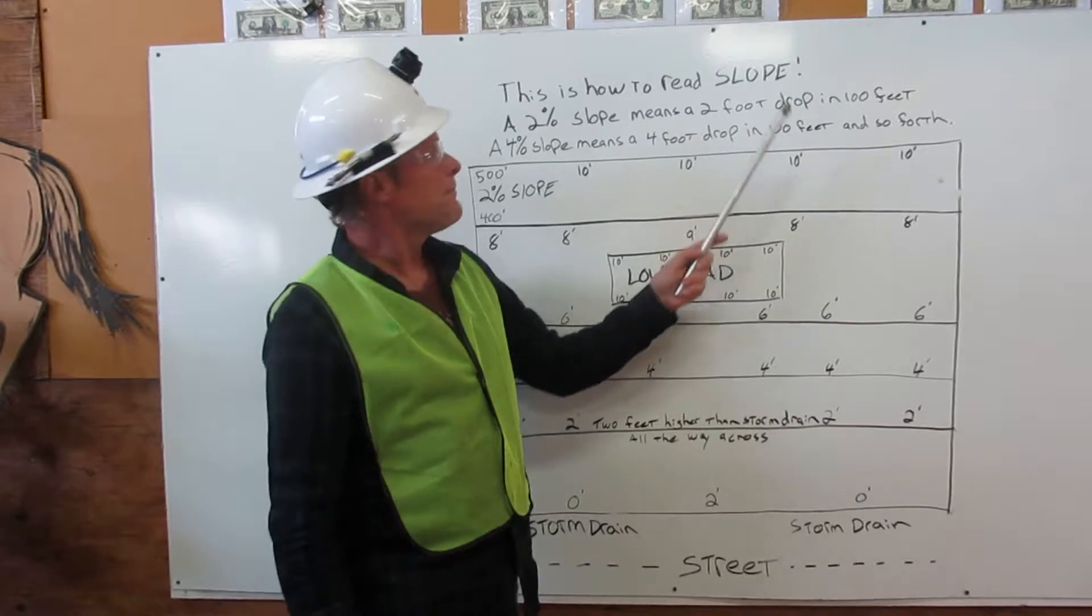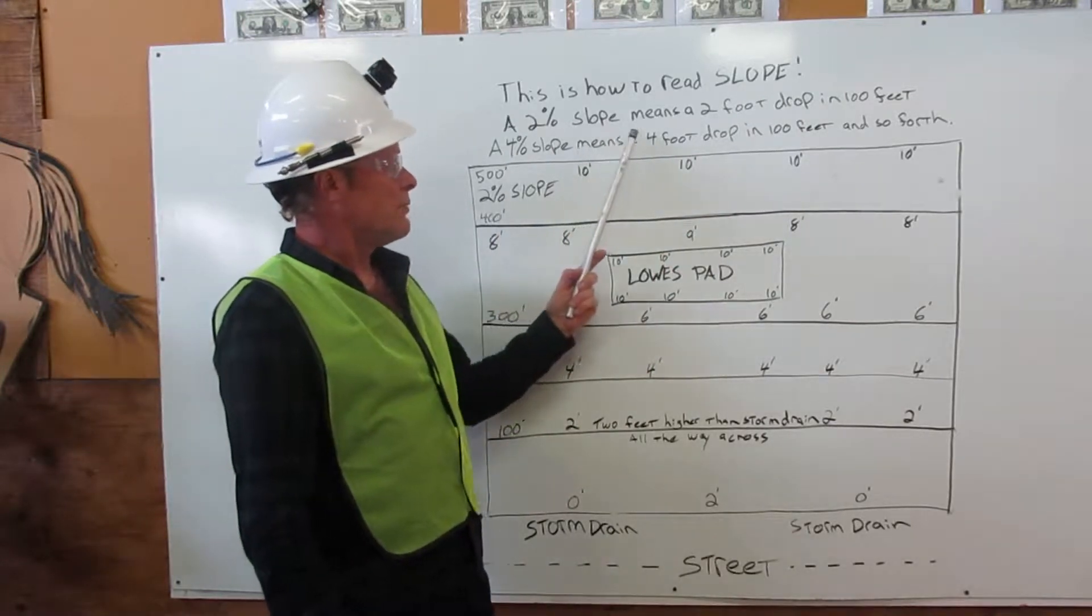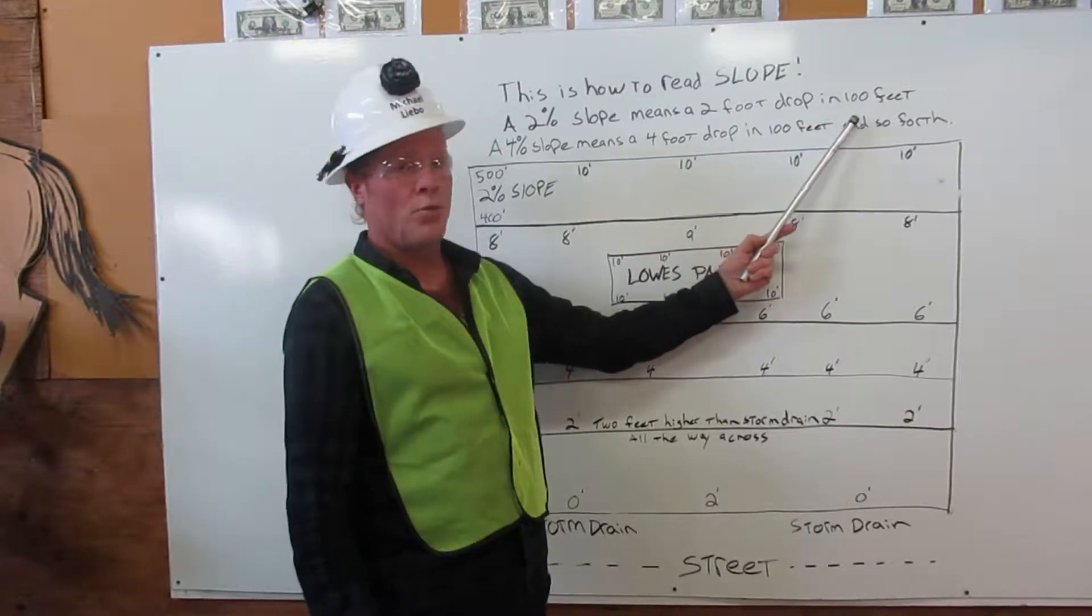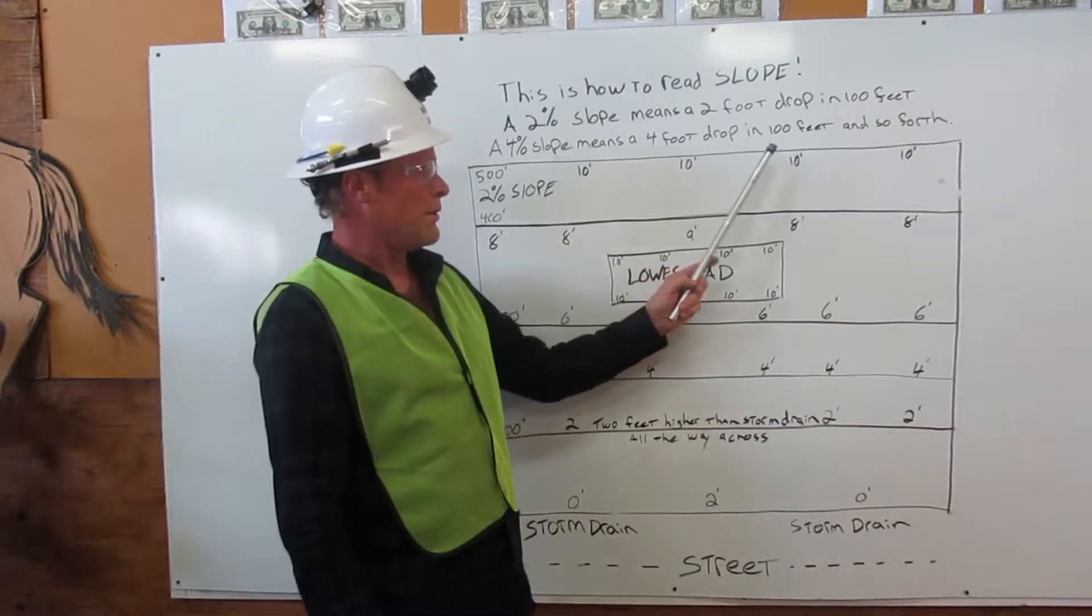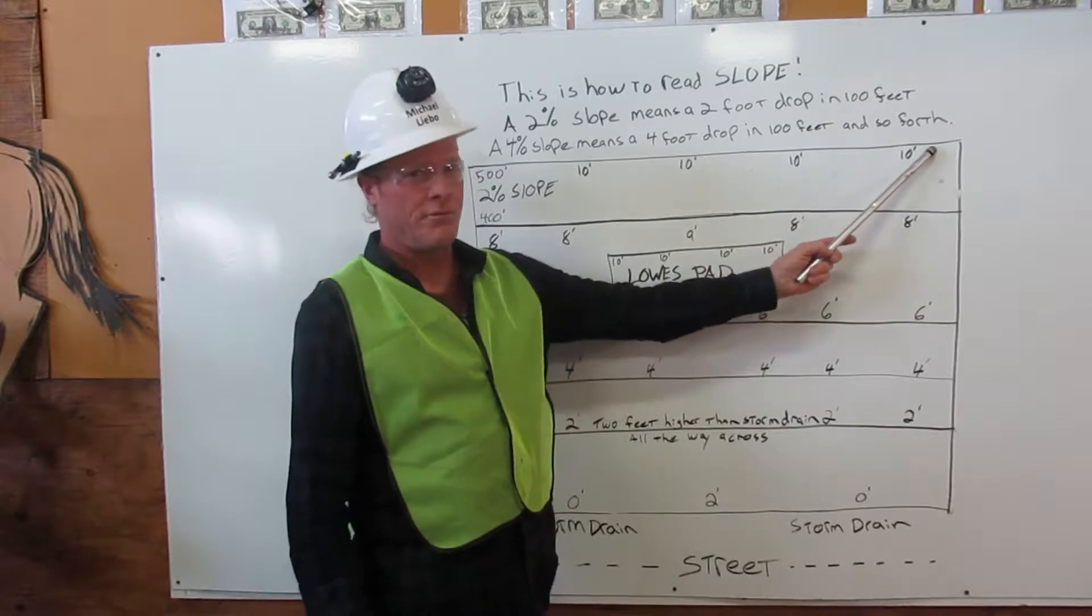This is how to read slope. A 2% slope means a two-foot drop in 100 feet. A 4% slope means a four-foot drop in 100 feet, and so forth.